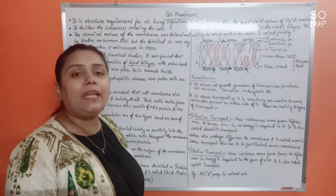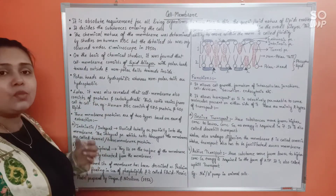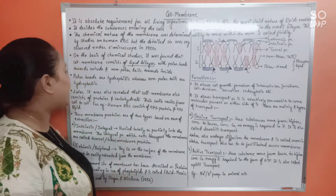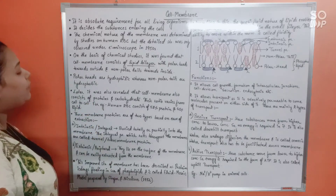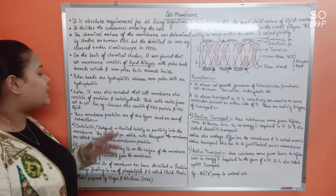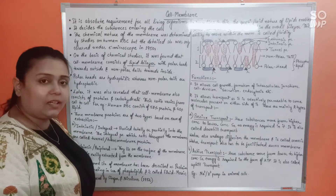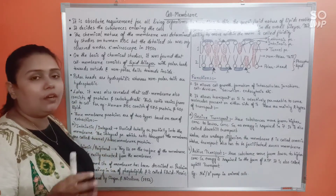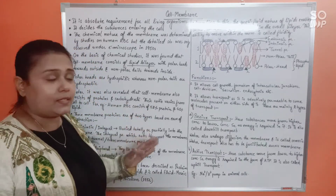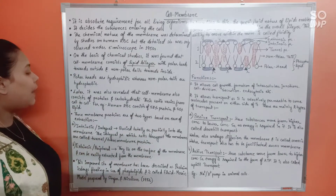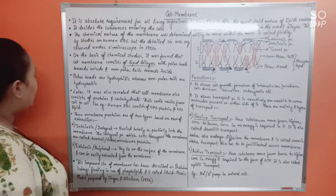Polar heads are hydrophilic (water-loving) whereas non-polar tails are hydrophobic (water-repelling). The cell membrane also consists of proteins and carbohydrates embedded in the phospholipid bilayer. The ratio of protein to carbohydrate varies from cell to cell; for example, human RBC consists of 52% protein and 40% lipid.